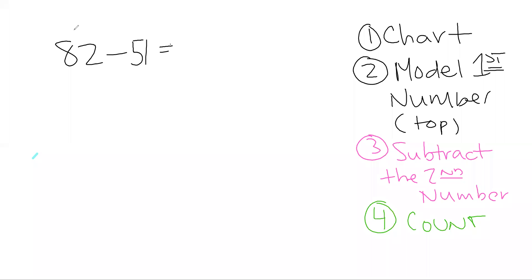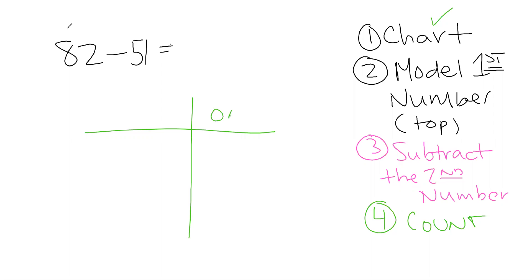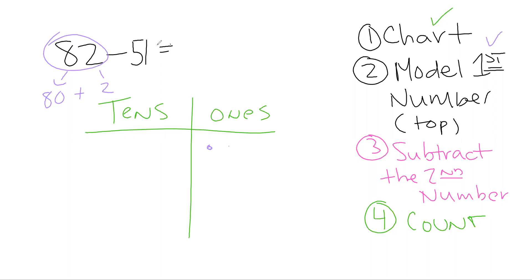I'm going to build a little space here so we can do the work. So we have 82, we're going to take 51 away. I'm going to build my chart first — my ones and my tens. And this new step is that I'm only going to model the first number. So that would be two ones — one, two — and eight tens, or eight groups of 10: 10, 20, 30, 40, 50, 60, 70, 80.